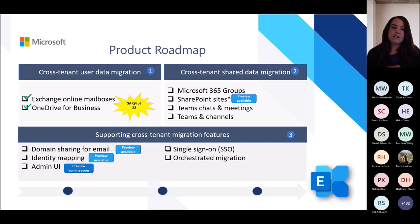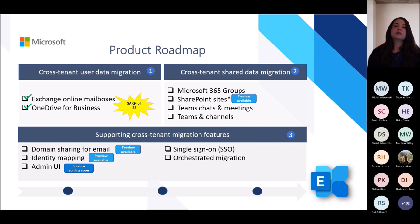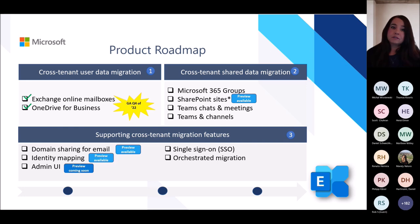These two features together will be included in a single add-on license for most plans. The add-on license will be available for purchase via your account manager channels. A single license will support one user's mailbox and OneDrive migration to another tenant. Move-backs in the event of an emergency or error will also be supported for that single user license.